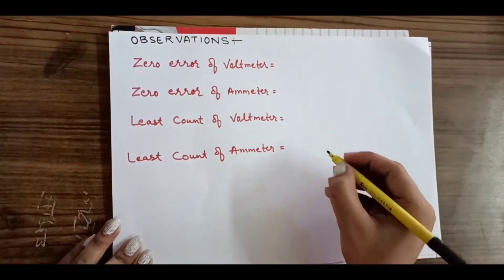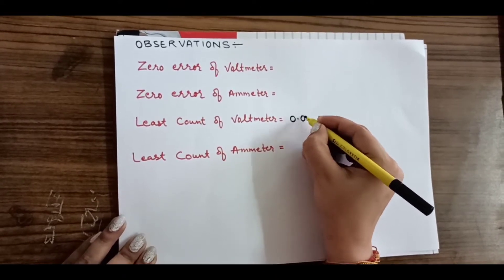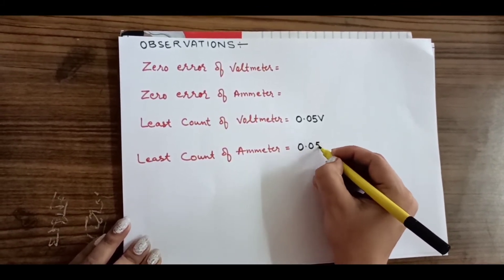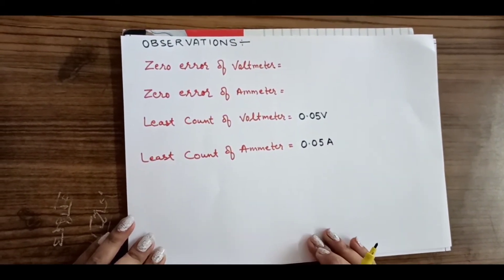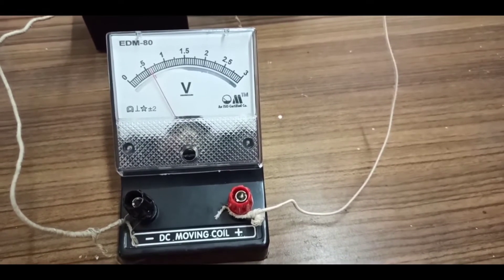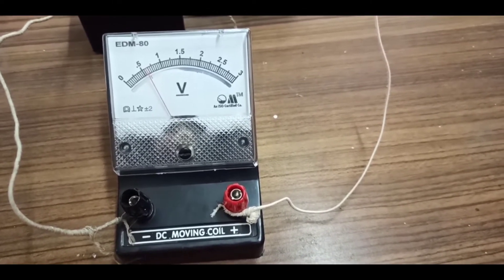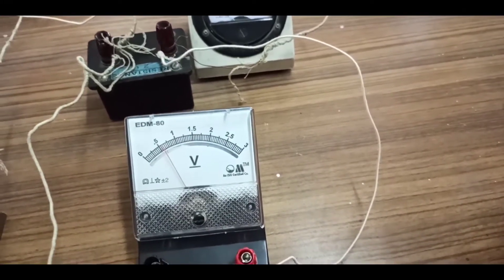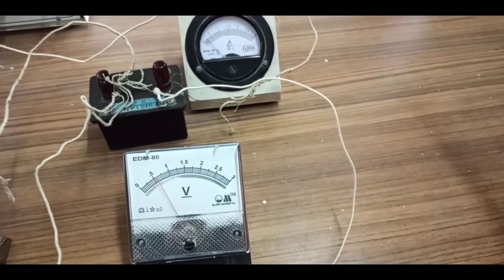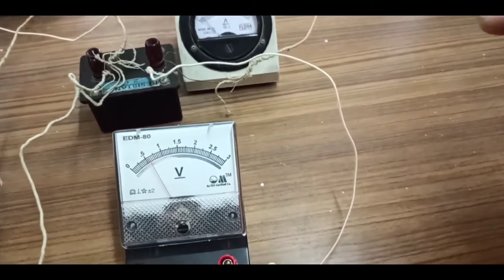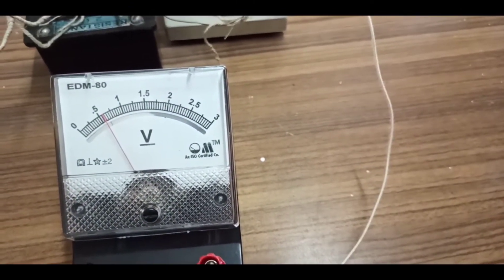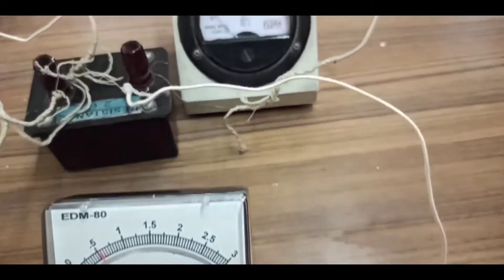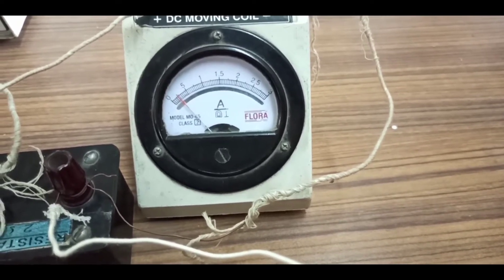So the least count of our voltmeter is 0.05 volt and the least count of our ammeter is 0.05 ampere. Now let's find out the zero error of our voltmeter and ammeter. Zero error means the reading shown when the rheostat is at the zero position. The error shown is above zero, so we will add the zero error to our observation. The number of divisions shown by the voltmeter is 11, and the number of divisions shown by the ammeter is 4.